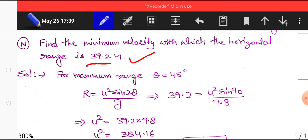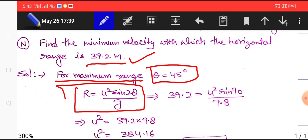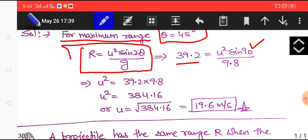So 39.2 meter is the range required and we know that range is maximum at theta equals 45 degrees and formula of range is R equals u squared sine 2 theta divided by g. Comparing range with 39.2 meters and putting the value of theta 45 degrees, 2 theta will become 90 and sine 90 equals 1.